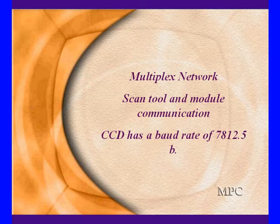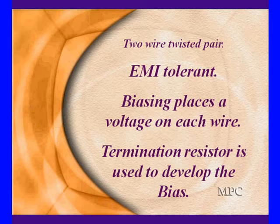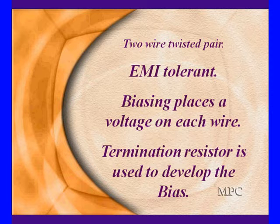It's got a 7812 baud rate. It's very noise or EMI-tolerant, electromagnetic interference. This is because of a twisted pair. It's very much like and very much akin to CAN.